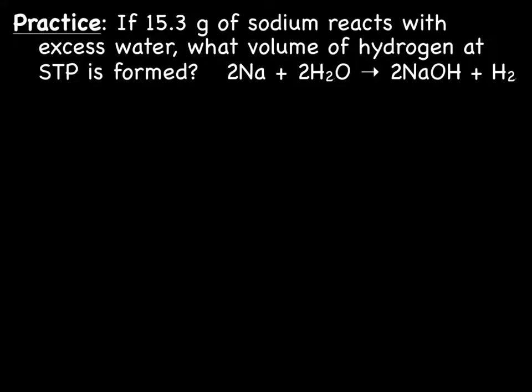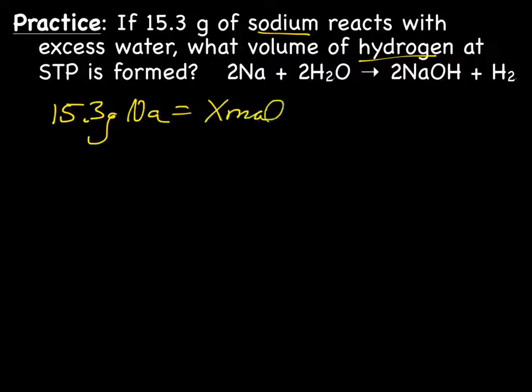We have 15.3 grams of sodium reacts with excess water. Starting with sodium, we want to end up with hydrogen. We know we're going to have to use stoichiometry, because we're changing between molecules or atoms. First of all, they give us 15 grams of sodium. And I want to know the volume of hydrogen. I think what I'm going to do is I'm going to first figure out the number of moles of hydrogen using stoichiometry. My question will be 15.3 grams of sodium equals X mole of hydrogen.